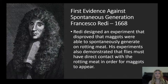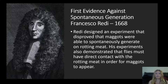The first evidence against spontaneous generation was by Francesco Redi in 1668. He conducted experiments that disproved that maggots were able to spontaneously generate out of rotting meat, demonstrating that flies must have direct contact with the rotting meat in order for maggots to appear.